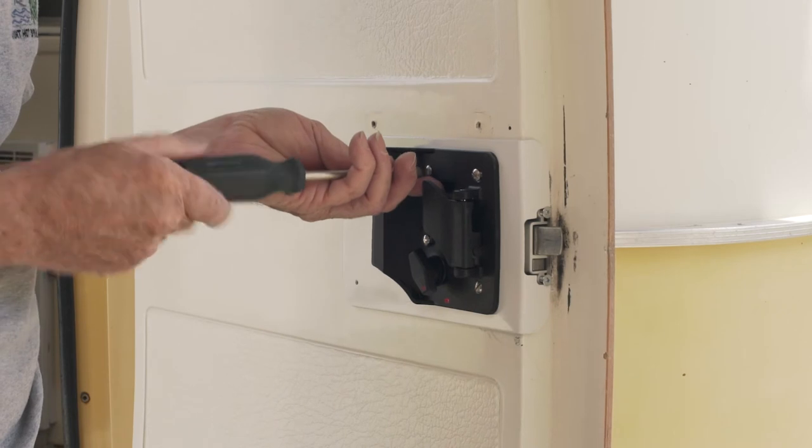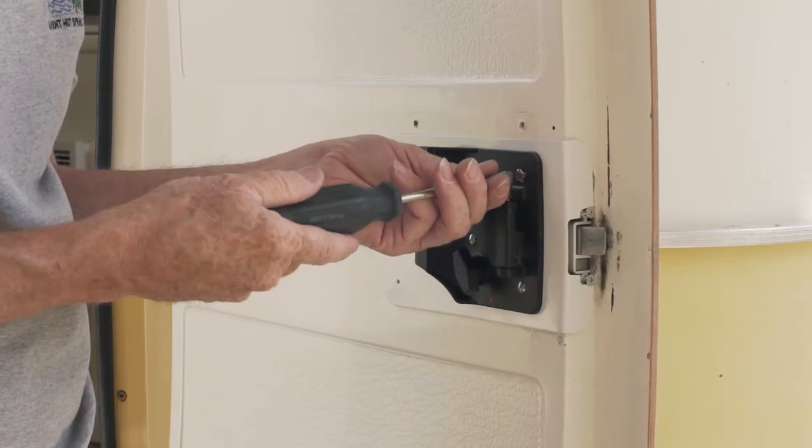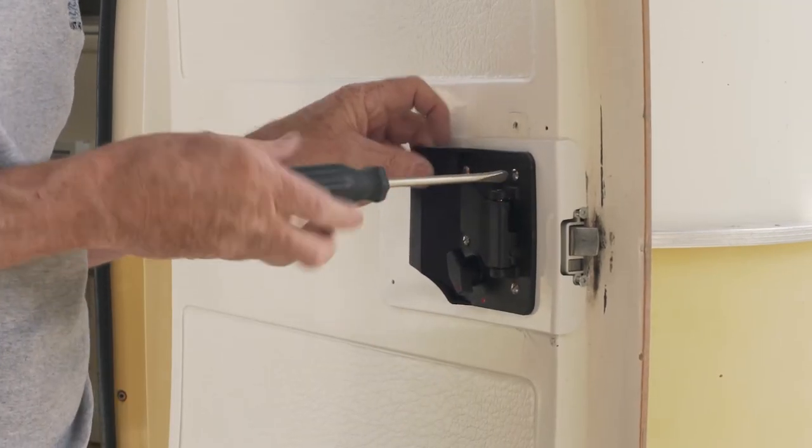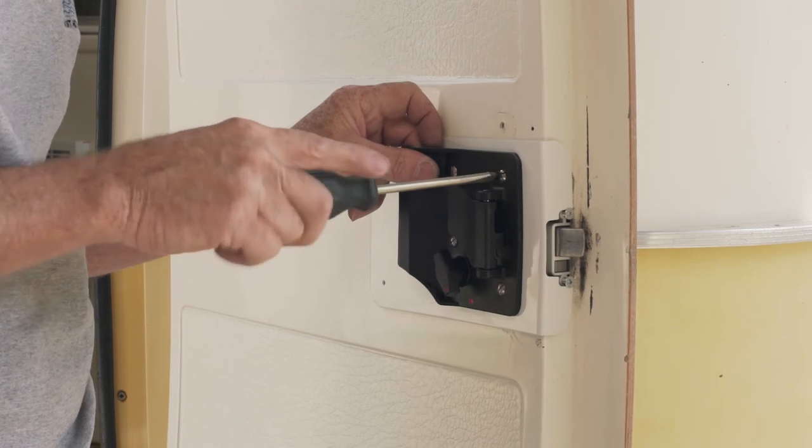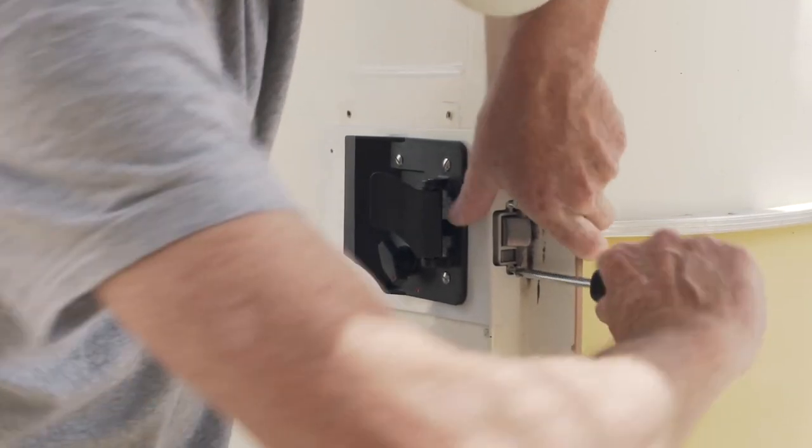Then gradually tighten the four screws in a criss-cross pattern until snug. Do not over tighten. Finally tighten the two flathead machine screws on the edge of the door.